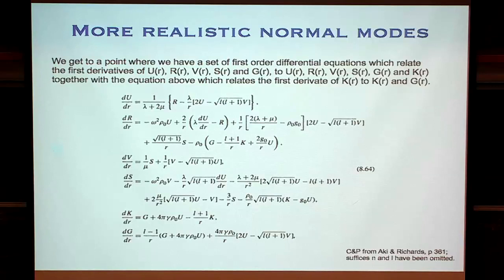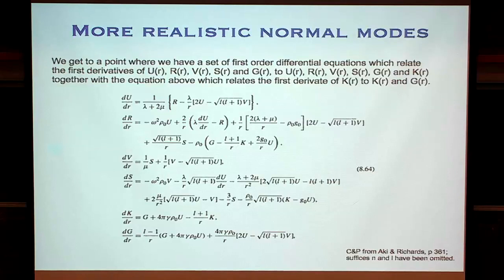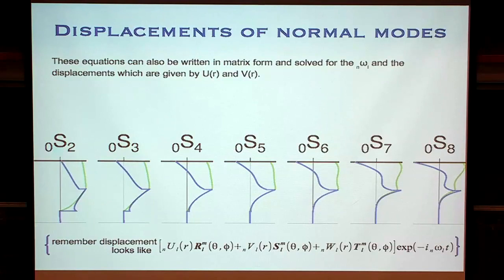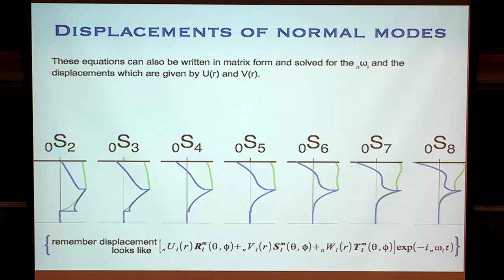When you go ahead and use a really nice code and solve those equations, you get U and V — how the Earth moves as a function of depth — multiplied by those vector spherical harmonics, and you can get out the corresponding frequencies. So these are the normal modes of the Earth: these are how for different ways of Earth shaking you can think about the displacement as a function of depth, multiplied by some surface spherical harmonic pattern. These are our eigenfunctions — this is what the Earth does when it shakes.